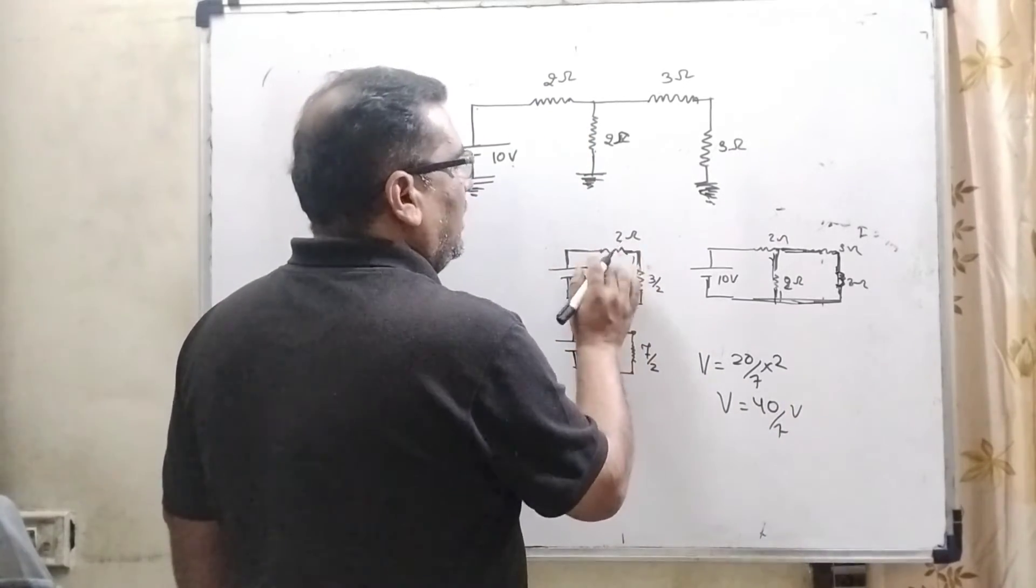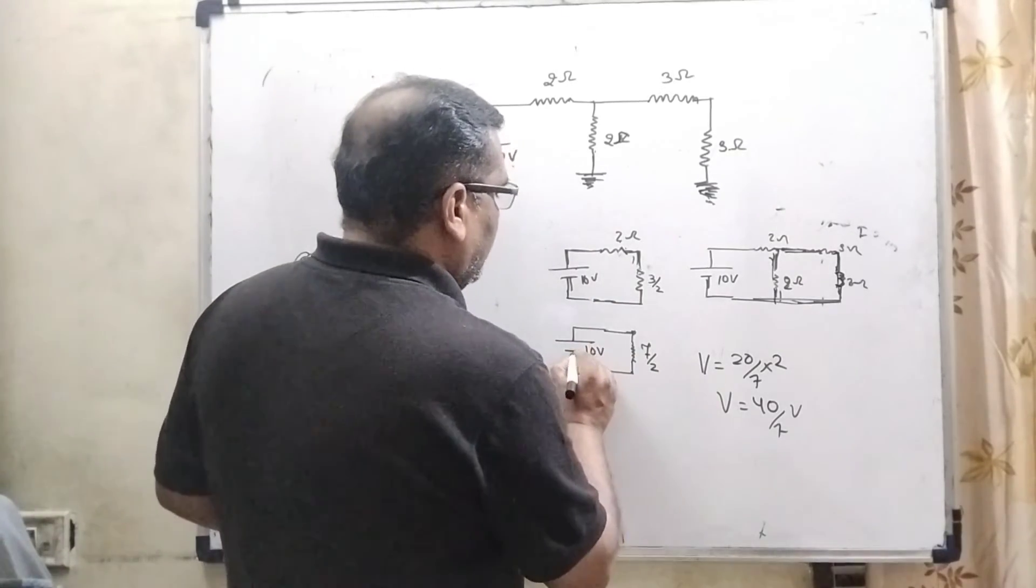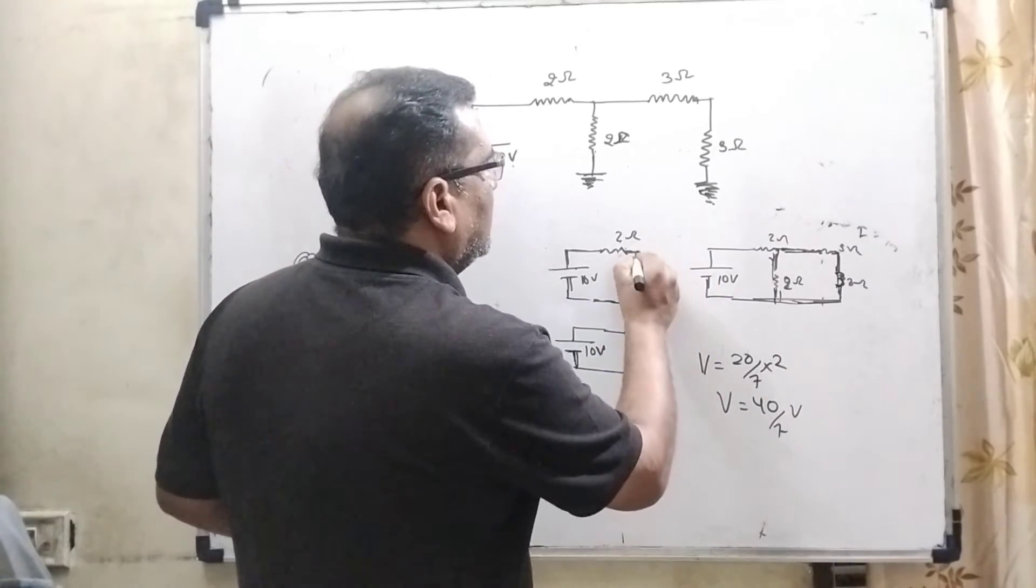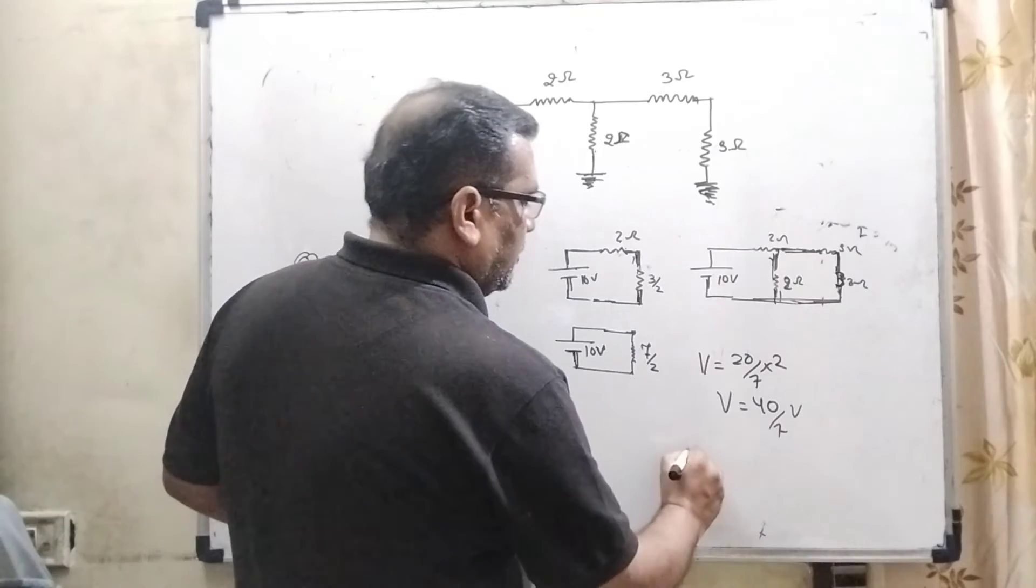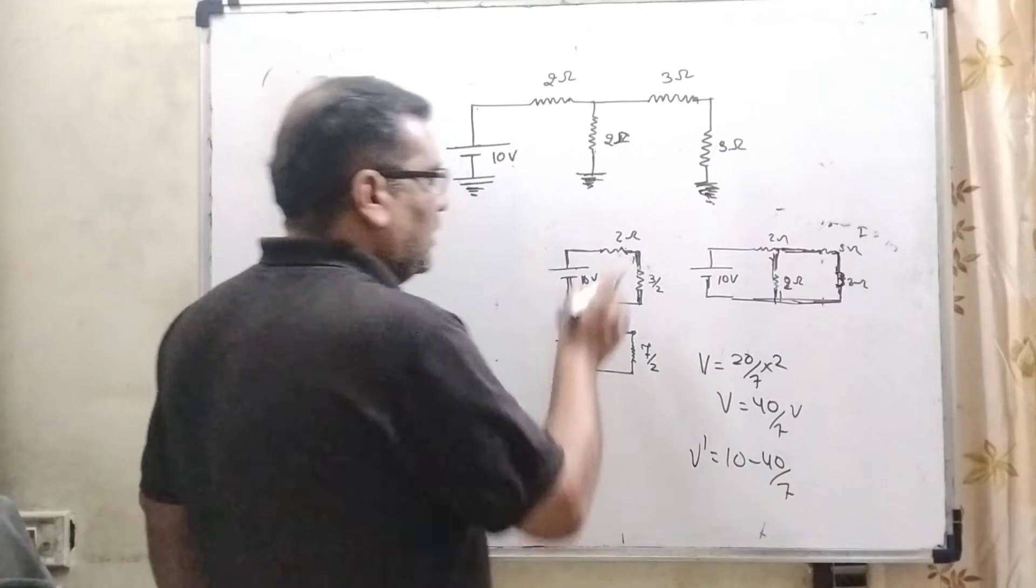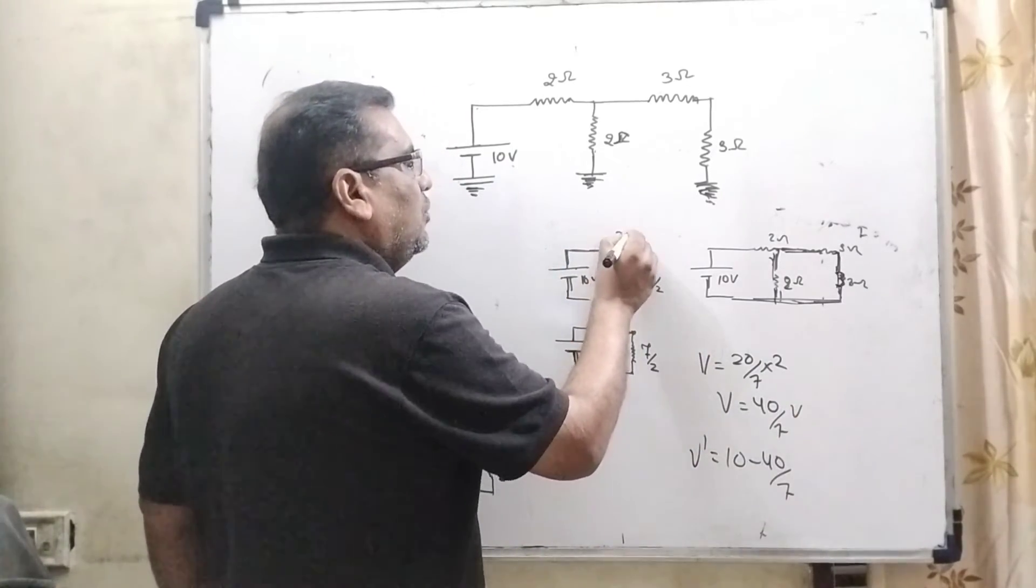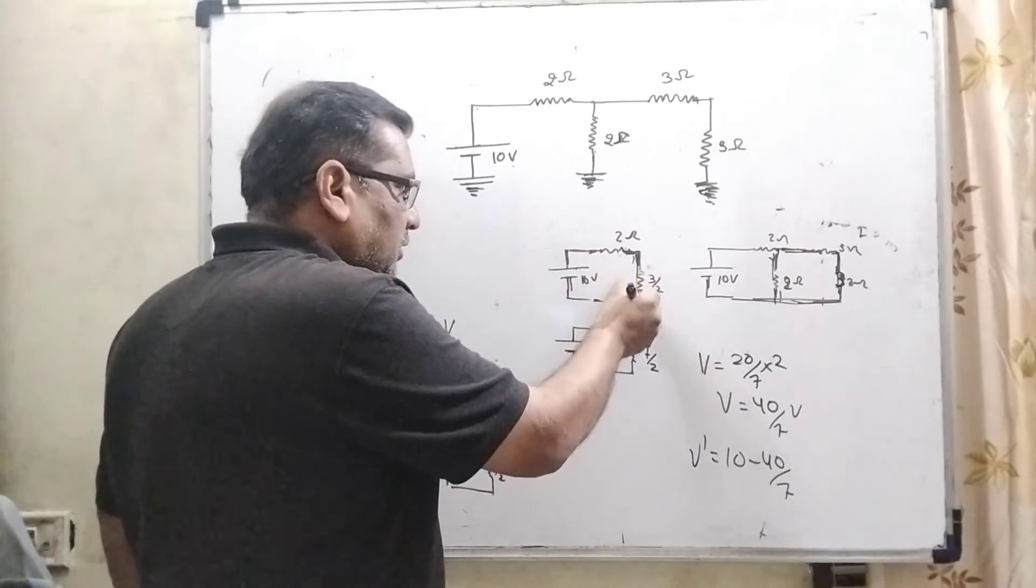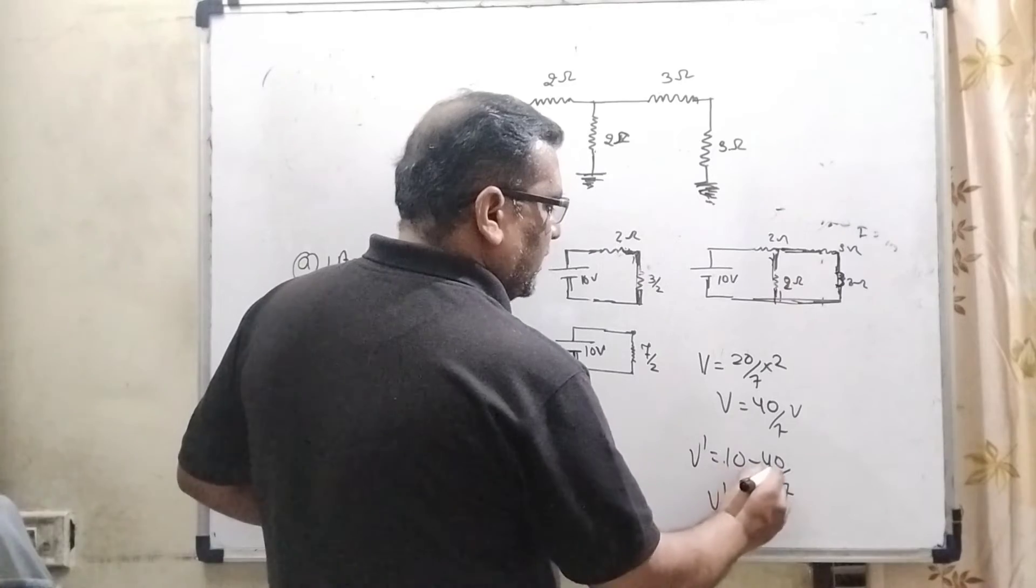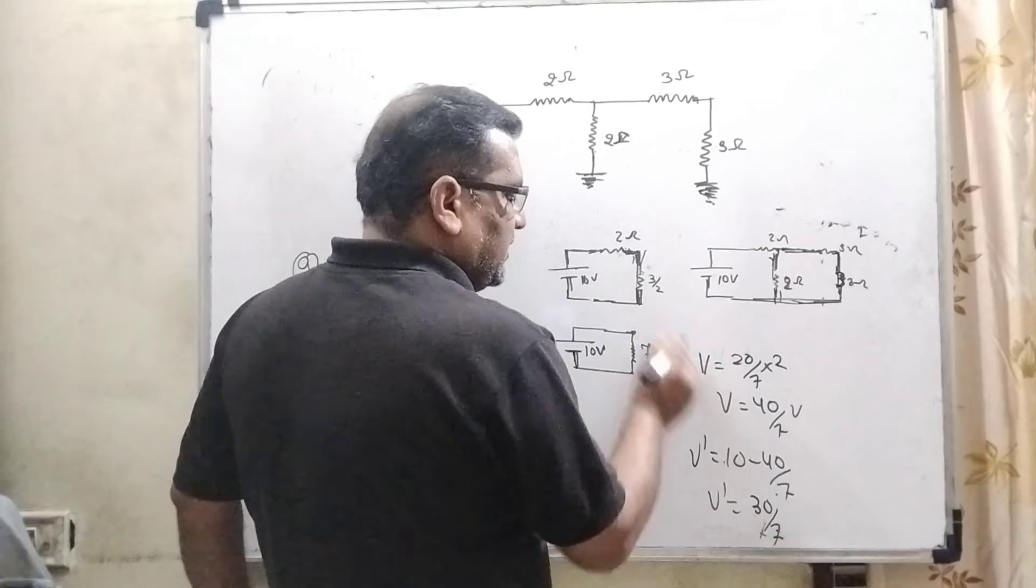So here, the potential at 2 ohm resistance is 40 by 7 volt. But now, 10 volt battery is connected. So remaining potential is passing through this circuit. Therefore, V dash equal to 10 minus 40 by 7, because here 40 by 7 volt is consumed in 2 ohm resistance. So remaining potential passing through this resistance, V dash equal to 70 minus 40, that is 30 by 7. So remaining potential is 30 by 7 volt.